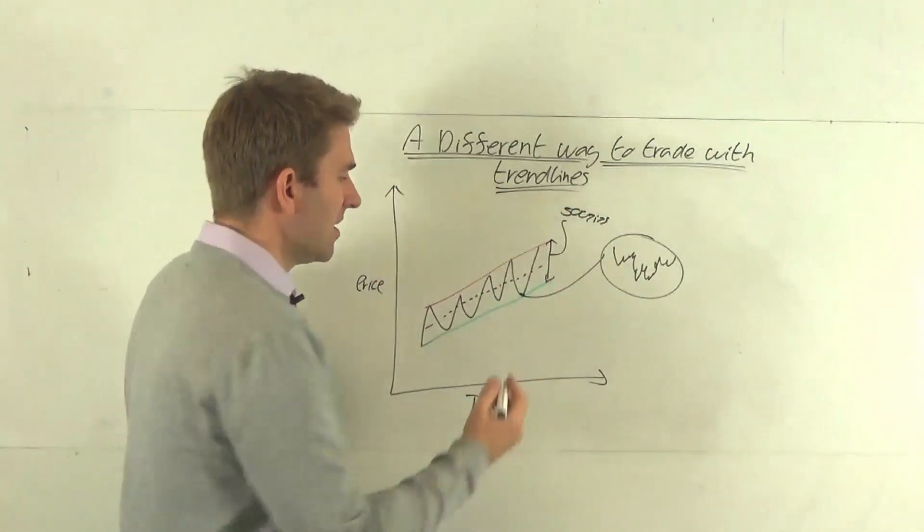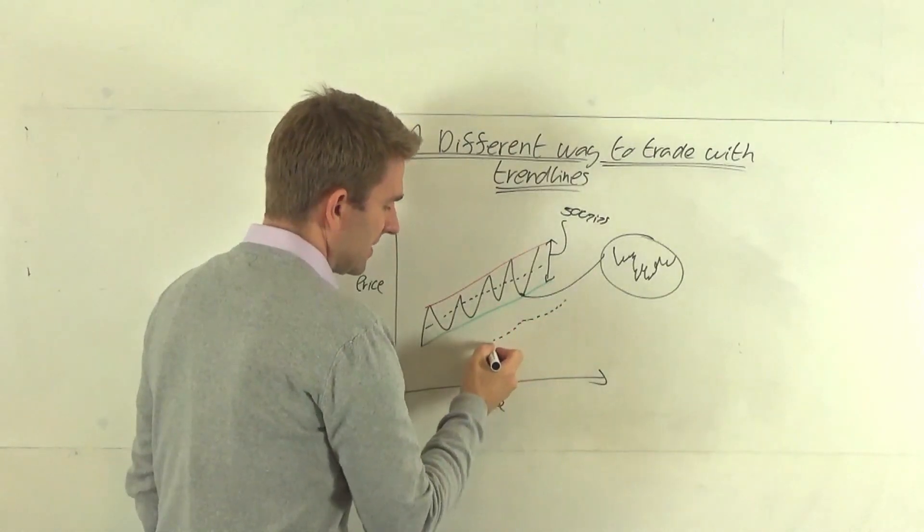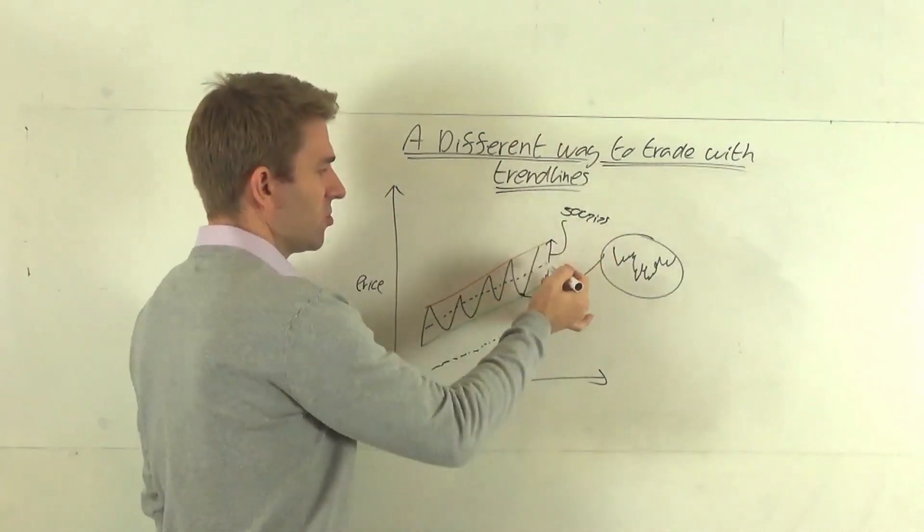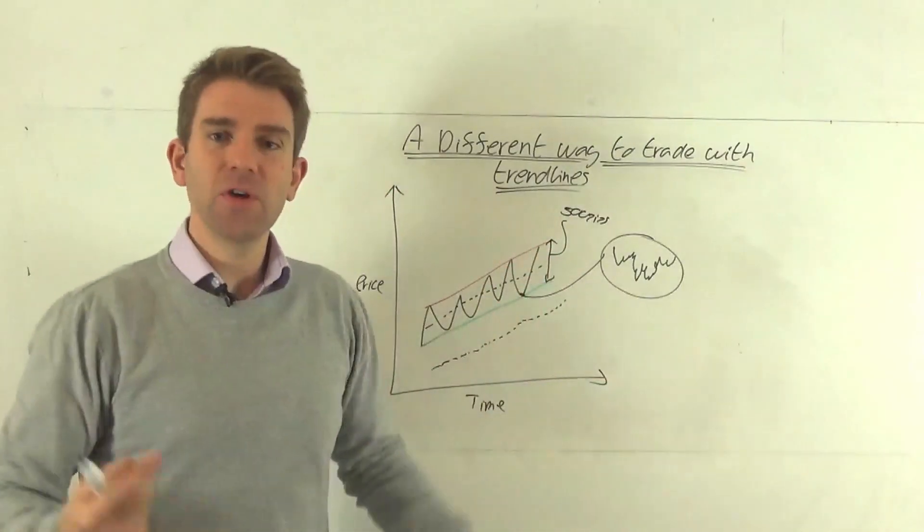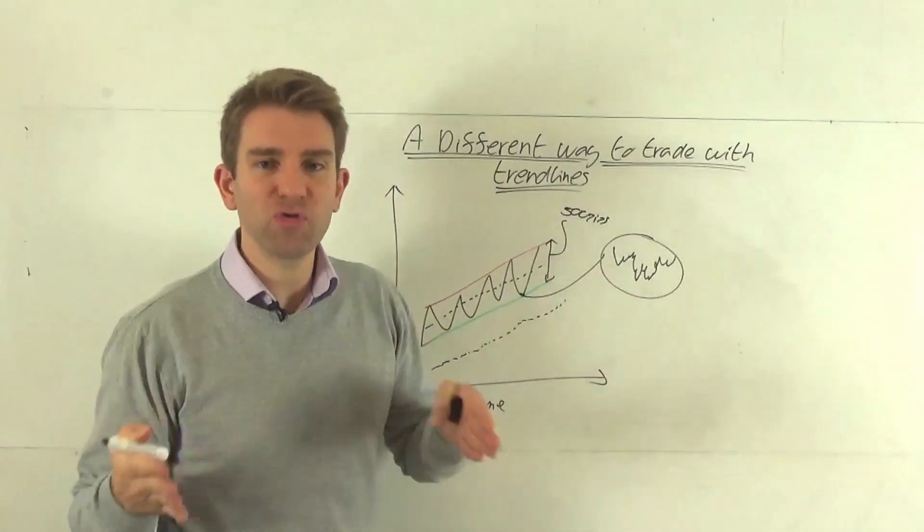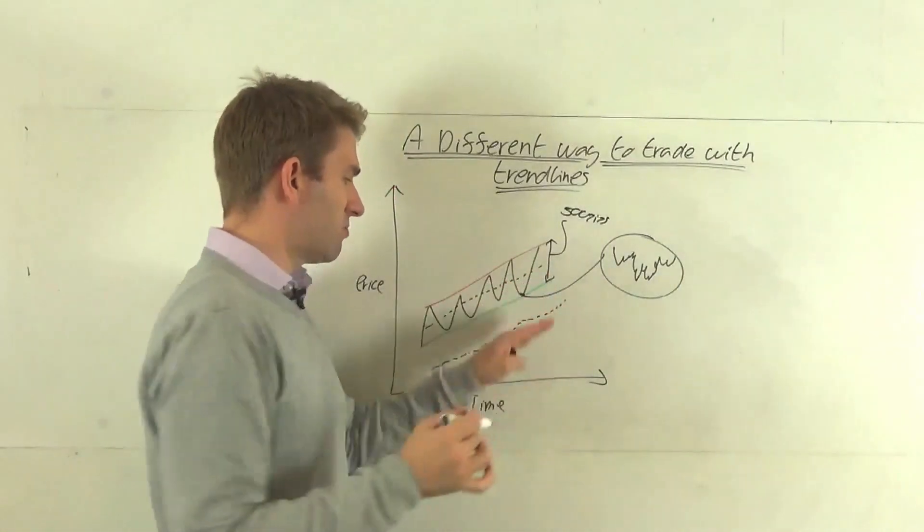So we're unlikely to go 250 pips down here in this case, in this example. So 500 pips divided by two, our center point is 250 pips. We're unlikely to go there, so we can frame our trade around this. Now, if we make the assumption that we're going to get small breaks through that low.